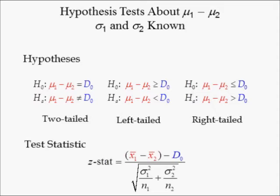The numerator of the test statistic is the difference in sample means minus the hypothesized difference of the population means. Most of the time, the hypothesized difference d0 is equal to 0. When this is the case, you are testing whether x-bar 1 is greater than, less than, or equal to x-bar 2. The denominator of this statistic is the standard error of the difference in means.